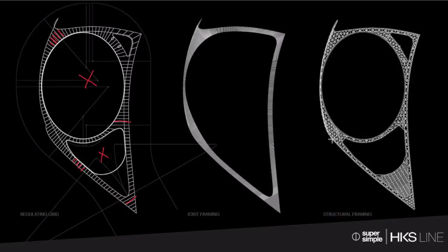Just to be clear: the structure you're seeing here is the structure that's supporting the panels — it's the substructure that is then attached to the primary structure shown on the left. That's correct.